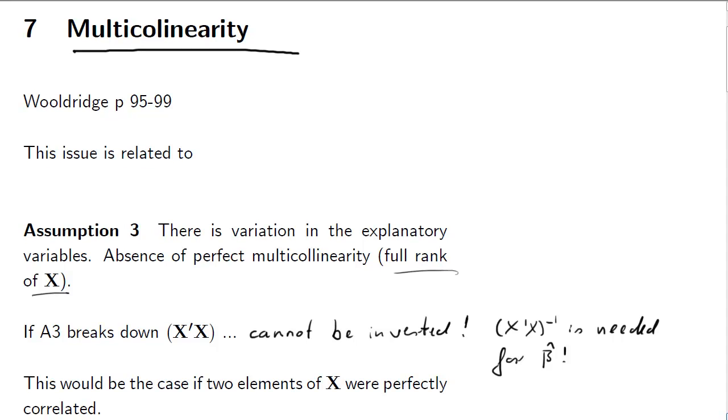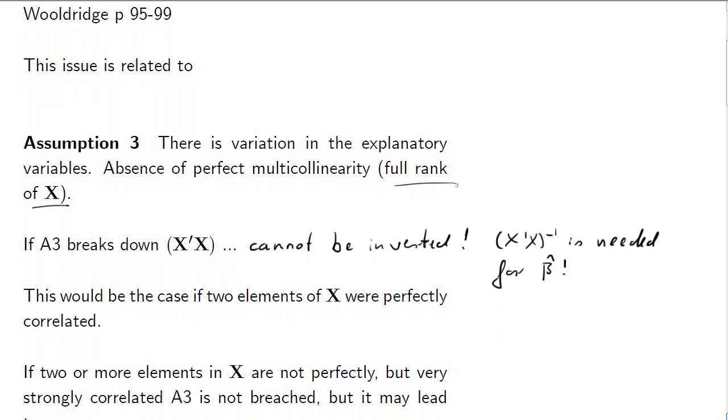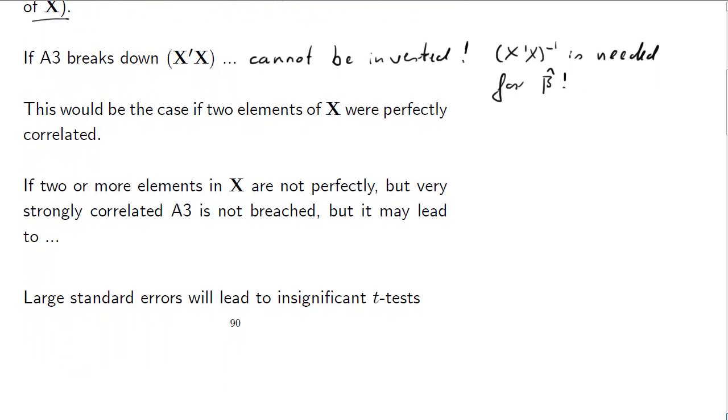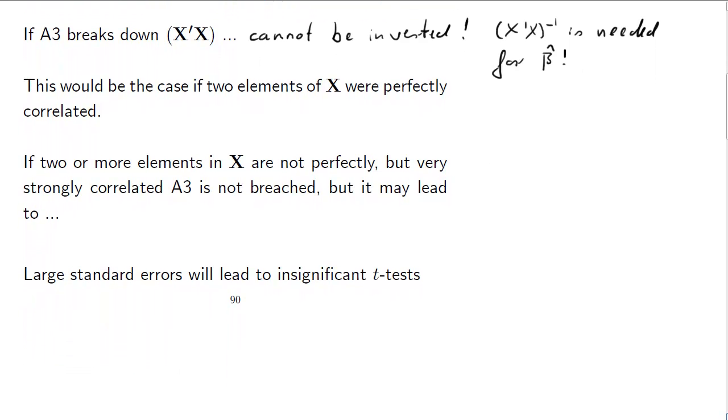Remember the formula for beta hat. That would be the case if we had, for instance, two elements that were perfectly correlated. As the simplest case, we could also have a combination of some elements in X being able to perfectly explain another element in X.